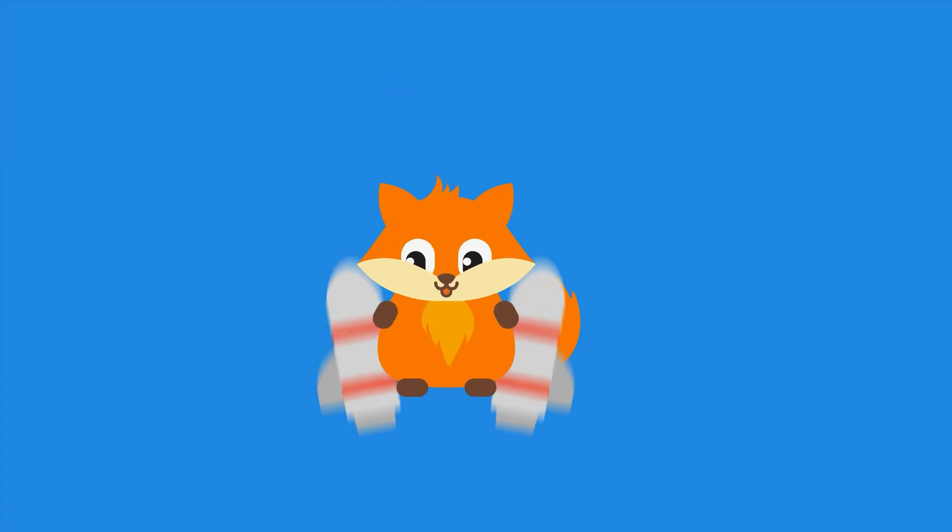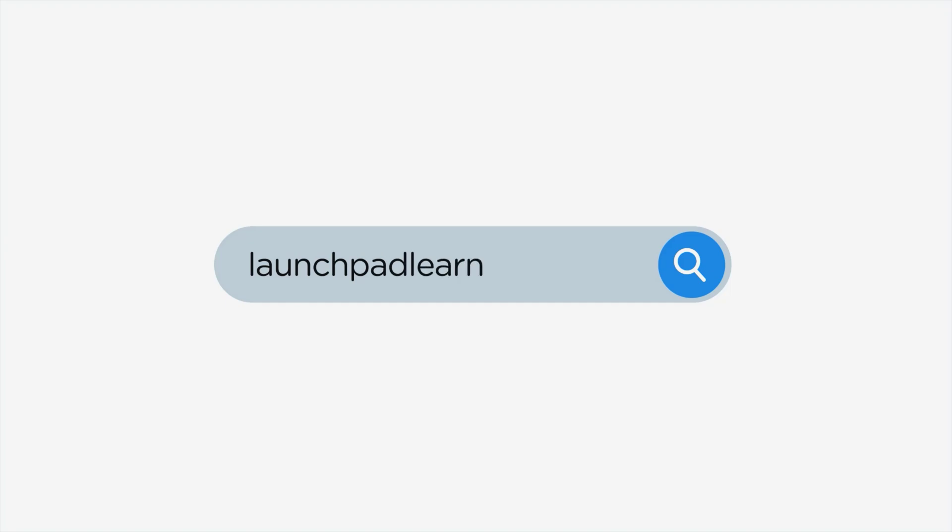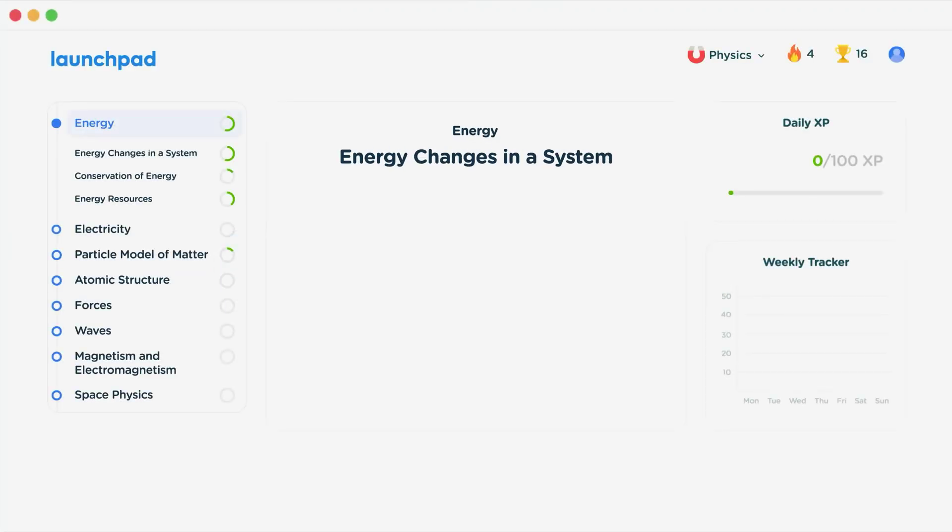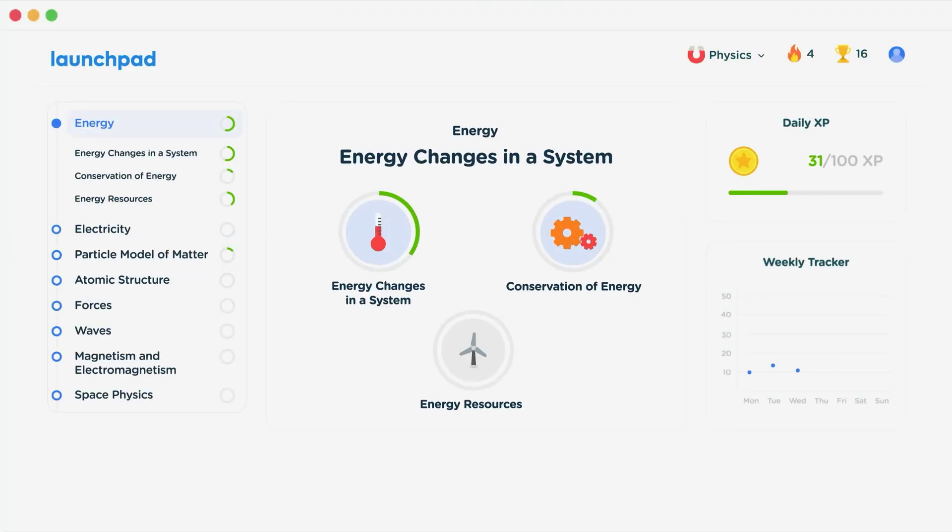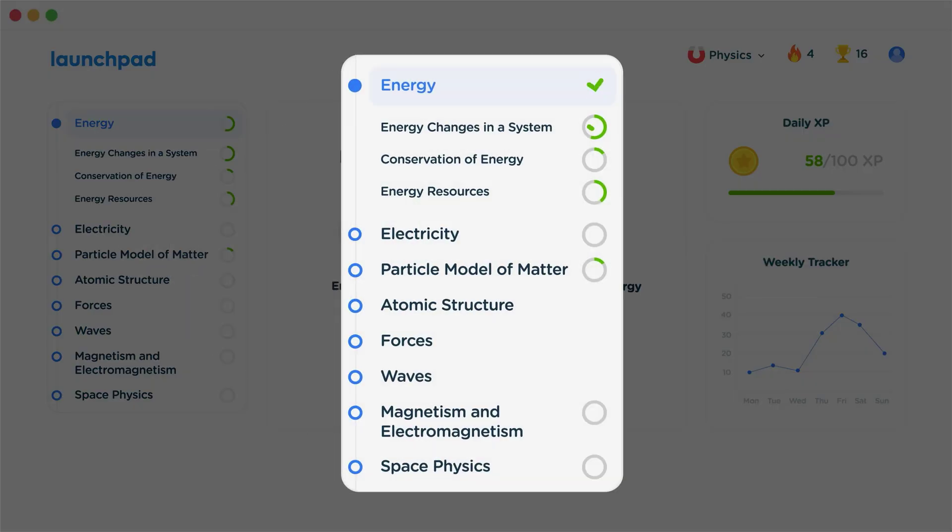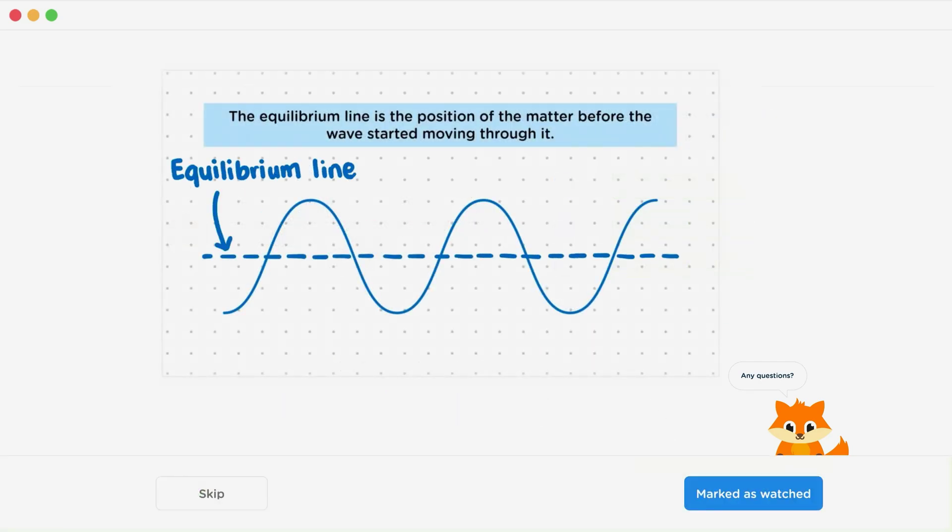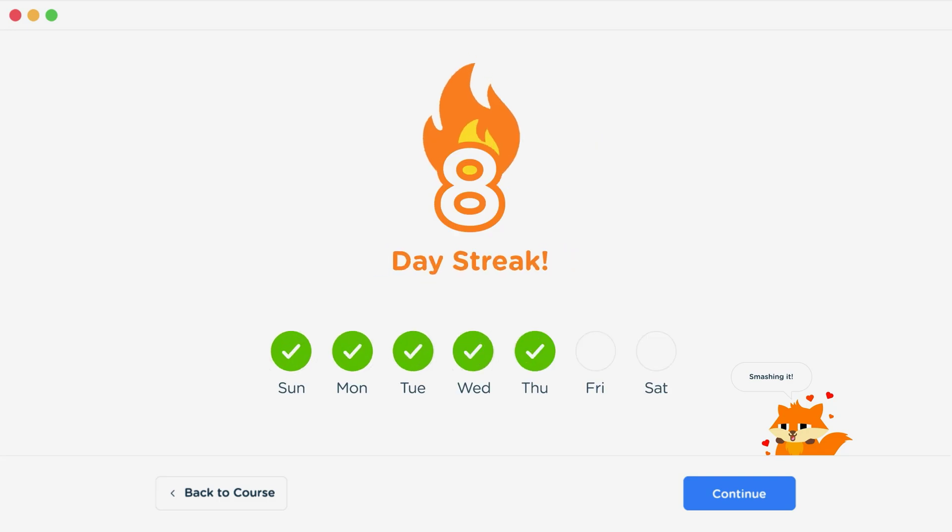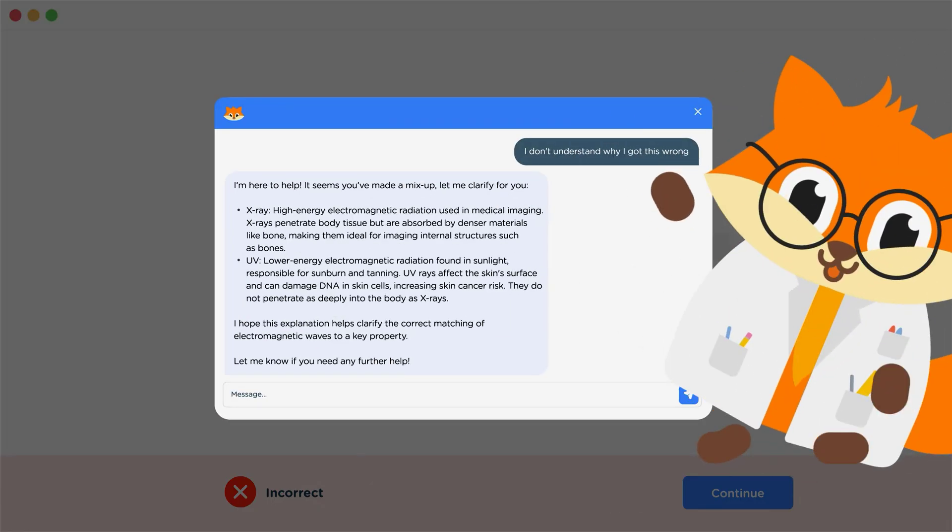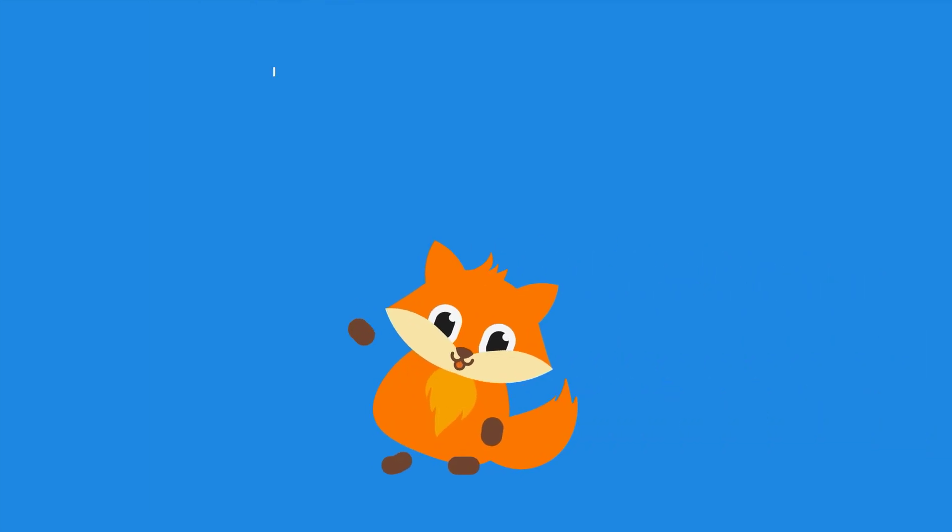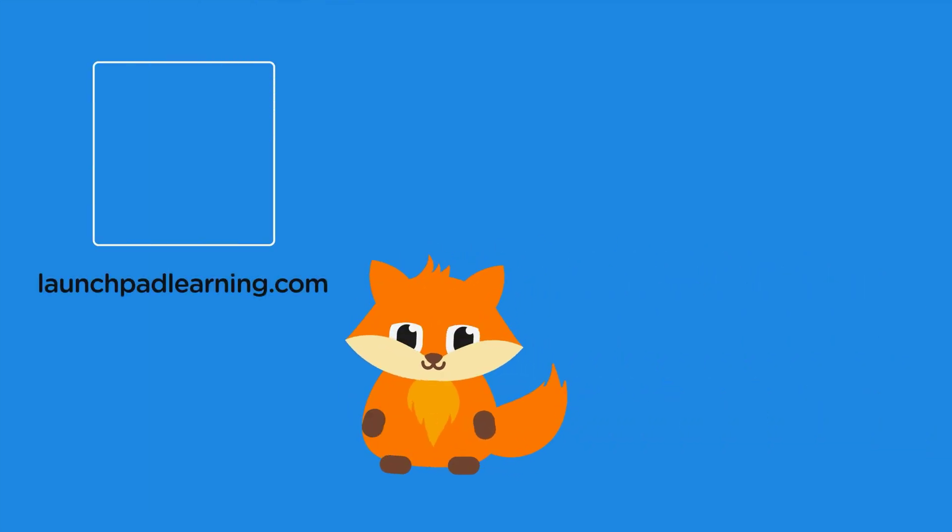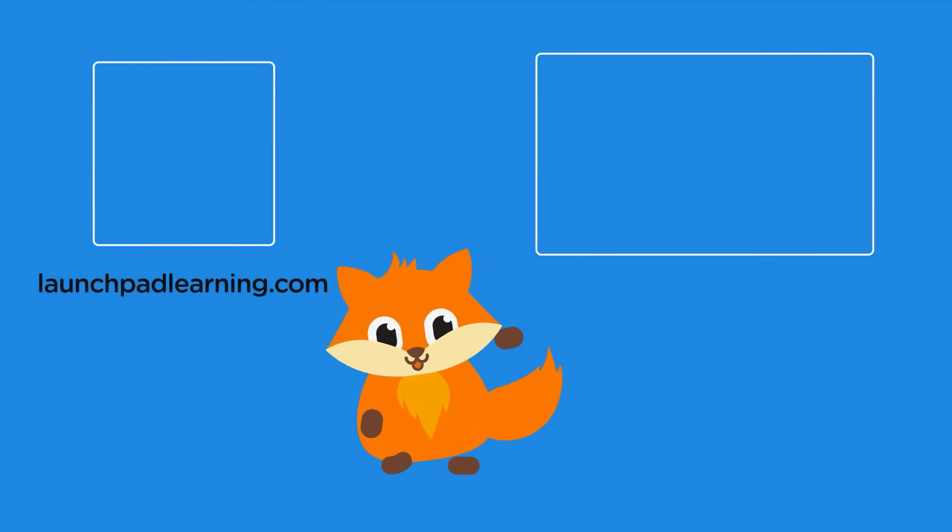If you want to take your GCSE revision to the next level, head over to launchpadlearning.com and check out our smart learning platform that's been designed to get you top results in your exams. We cover your whole specification and make revision fun with interactive quizzes, easy to follow videos and more. You'll be kept motivated by your own AI tutor who's here to support you every step of the way. To check it out for yourself, click here. Or click here to keep watching a selection of the videos from our full GCSE Physics course. See you there!